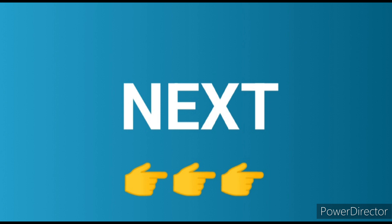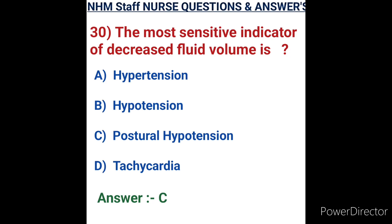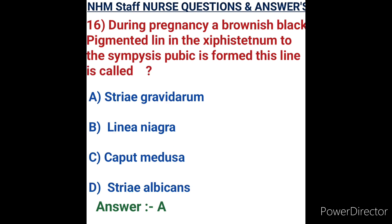Question number thirty: the most sensitive indicator of decreased fluid volume is. Options: A) hypertension, B) hypotension, C) postural hypotension, D) tachycardia. Hypertension means increasing blood pressure. Hypotension means decreasing blood pressure. Postural hypotension is low blood pressure that occurs when standing up from a sitting or lying down position, indicating decreased fluid volume. Tachycardia means increasing heart rate. Option C, postural hypotension, is the correct answer.